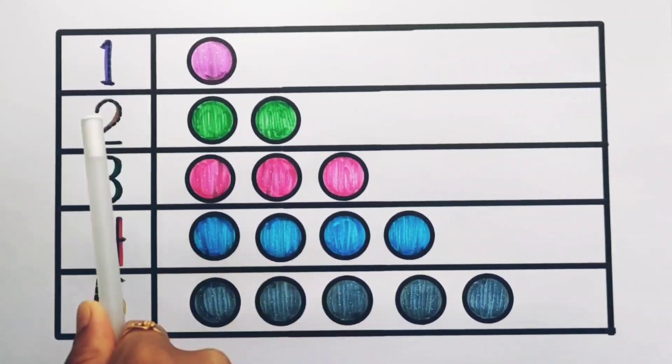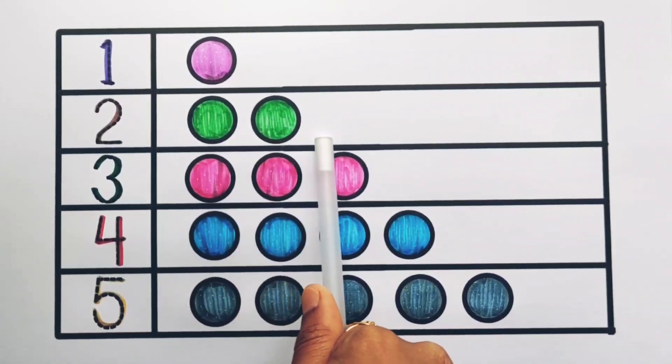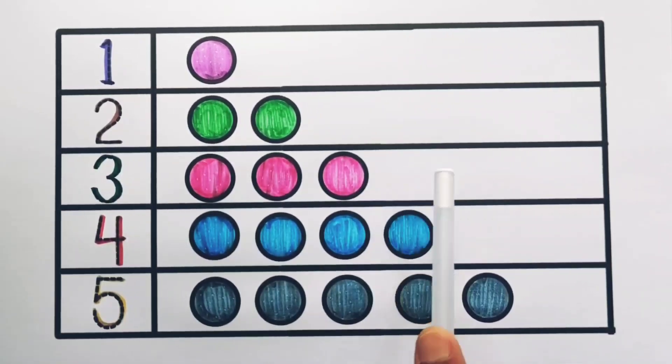1, 1 circle. 2, 1, 2, 2 circles. 3, 1, 2, 3, 3 circles. 4, 1, 2, 3, 4, 4 circles. 5, 1, 2, 3, 4, 5, 5 circles.